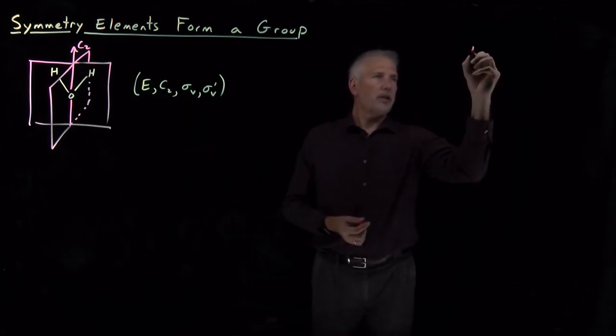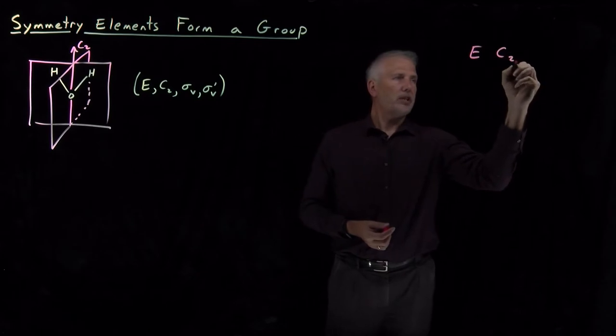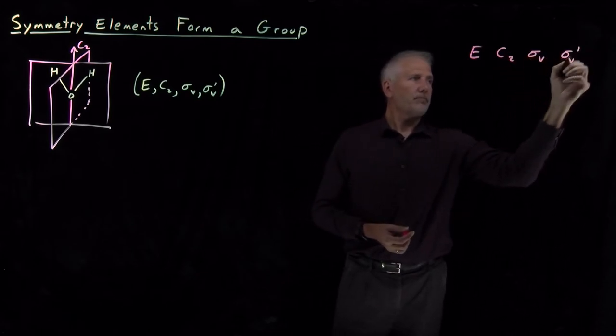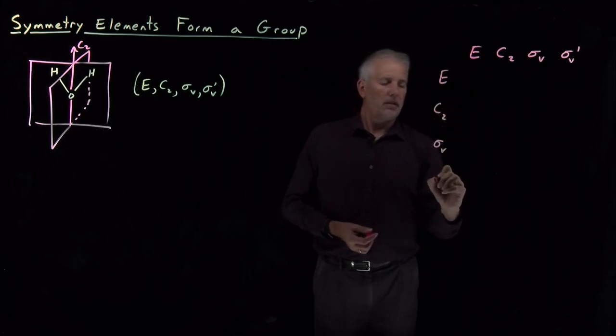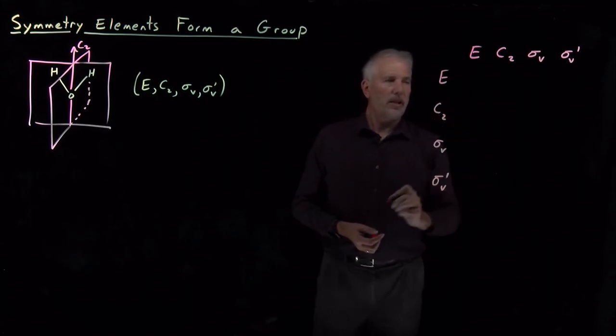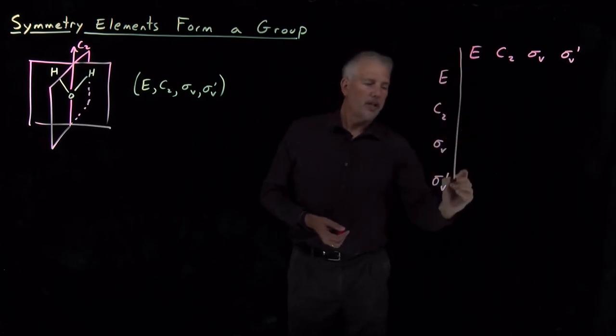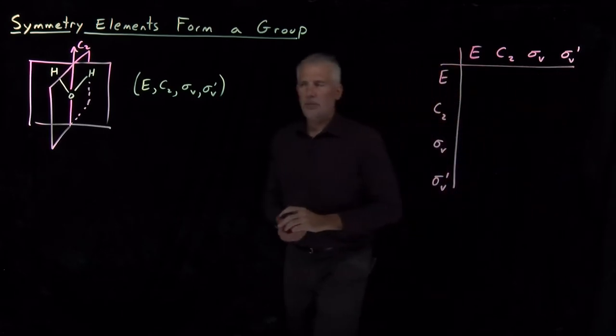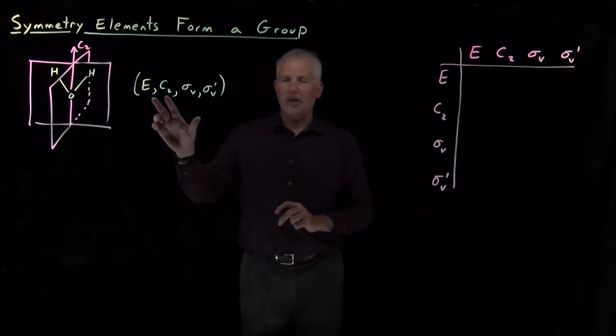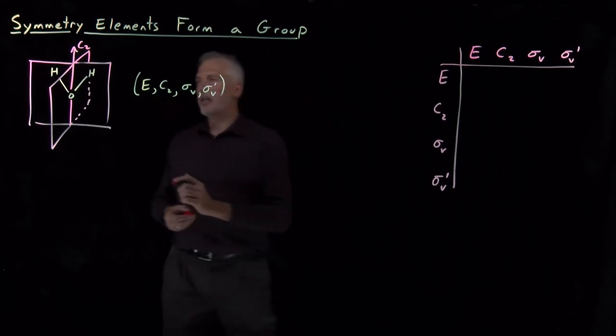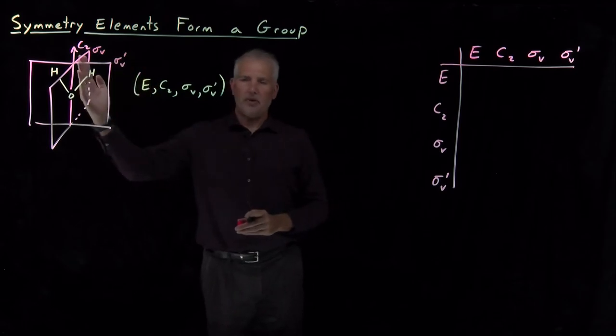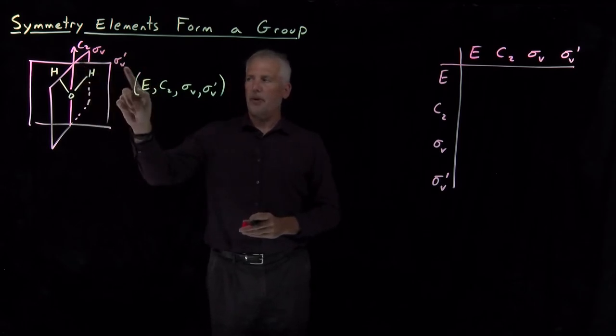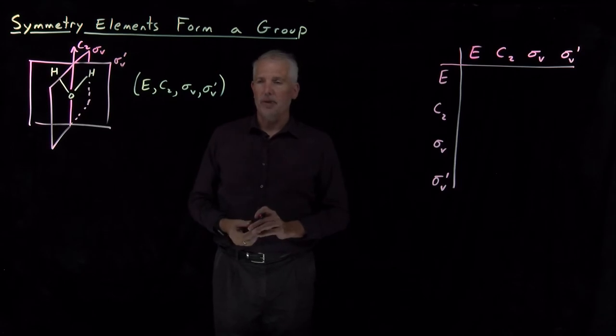So to double-check that that's true, we can make ourselves a brief little multiplication table. So we'll just go through all the cases of multiplying each of these symmetry elements or symmetry operations by another and seeing what we get. And let's go ahead and label sigma v being the one that bisects the molecule in half in this direction, sigma v prime being the plane that contains all three atoms of the molecule.